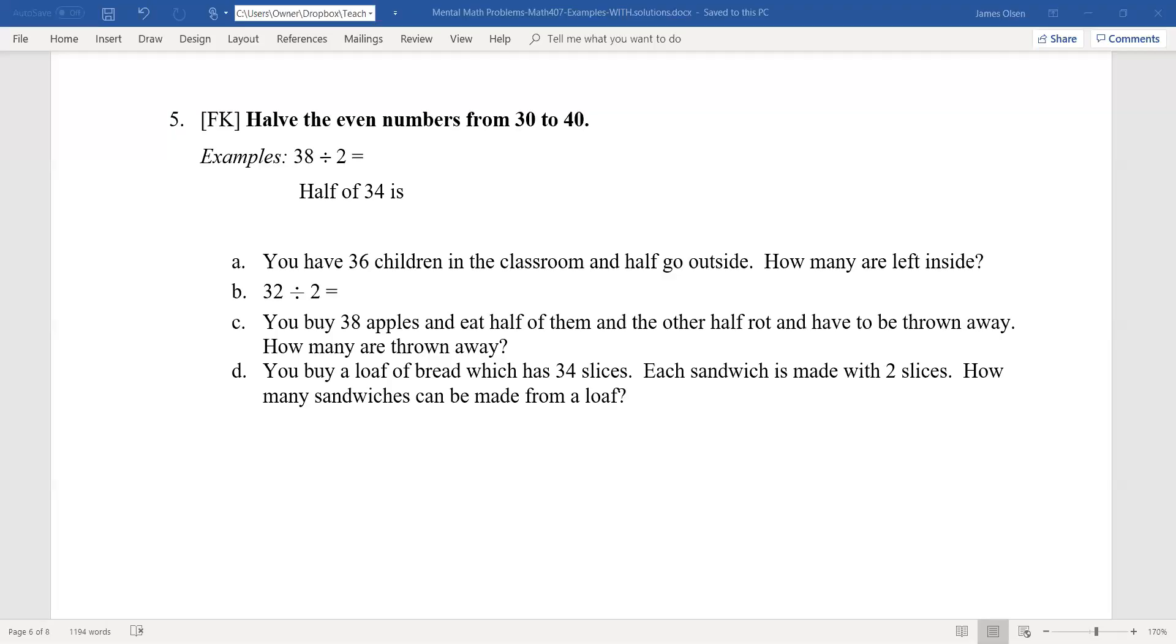So an even number divided by 2 is going to come out to be an integer. We're using two basic facts here. 30 divided by 2 is 15, and 40 divided by 2 is 20. So any even number in the 30s divided by 2 is going to be a number between 15 and 20.